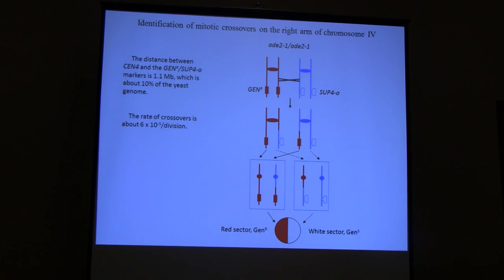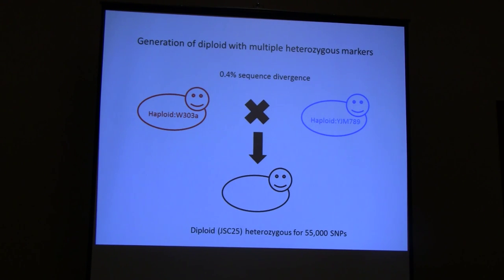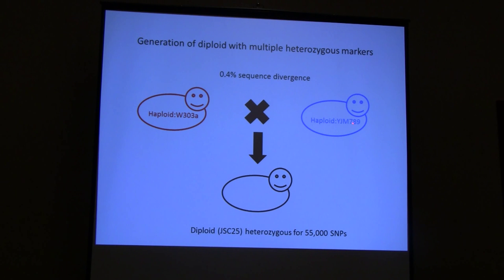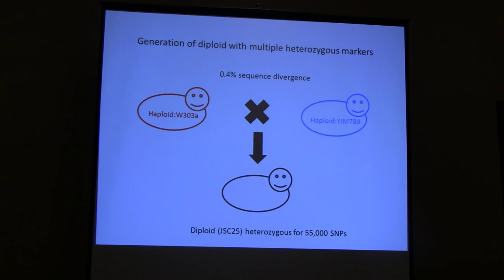To determine where crossovers occurred, we generated the diploid by mating two haploids with considerable sequence divergence. One strain is the commonly used lab strain W303; the other is a clinical isolate called YJM789. Their sequence divergence results in approximately 55,000 heterozygous SNPs, and since both strains have been sequenced we know that number is approximately correct. Those SNPs serve as our markers.